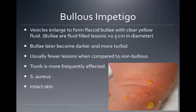Bullous impetigo consists of vesicles that enlarge to form flaccid bullae with clear yellow fluid. Bullae are fluid-filled lesions greater than half a centimeter in diameter. The bullae later become darker and more turbid. Usually fewer lesions are present when compared to non-bullous impetigo. The trunk is the most frequently affected area, and the causative agent is Staph aureus.